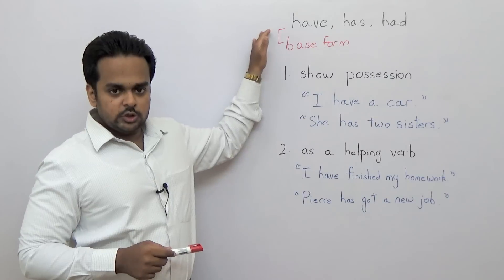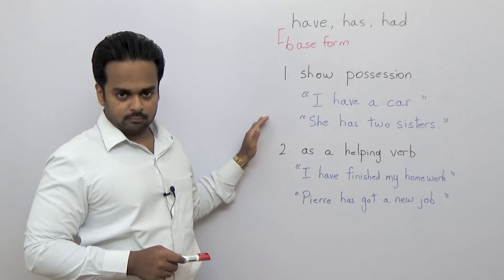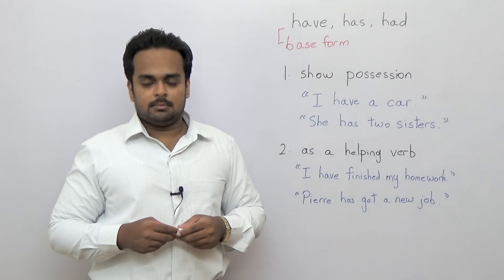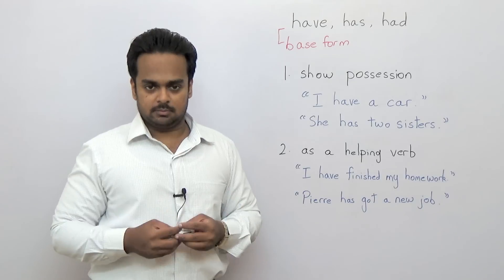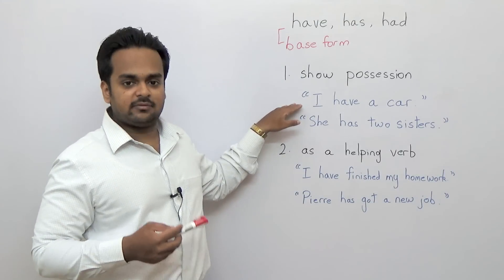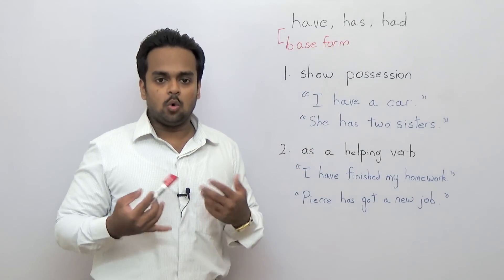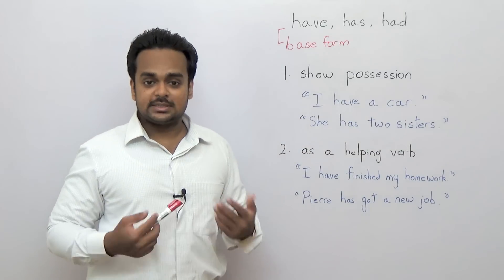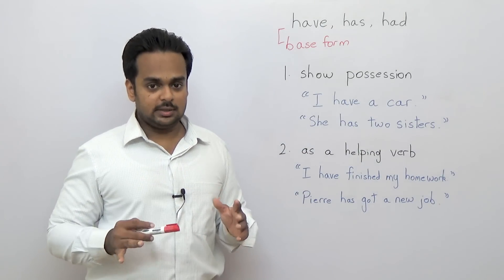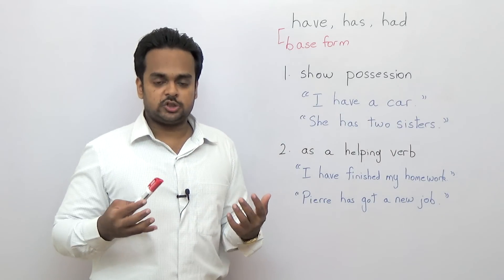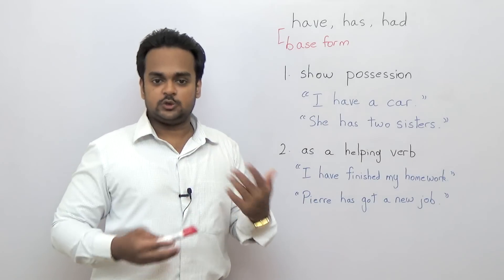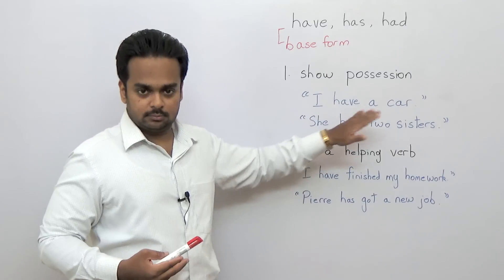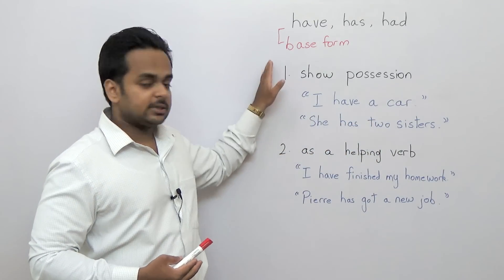Now this verb is used in two ways. First, it's used to show possession — this means that it shows that you have something. For example, if I say 'I have a car,' it means that I own a car. Or you can say 'she has two sisters.' That doesn't mean she owns her sisters; it just means she is related to these two people in her family. So here it shows the relationship between them, and in that way it shows possession.